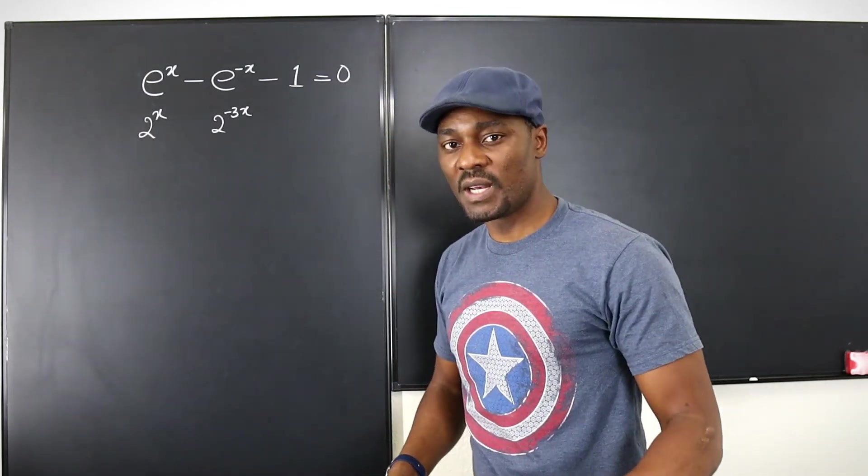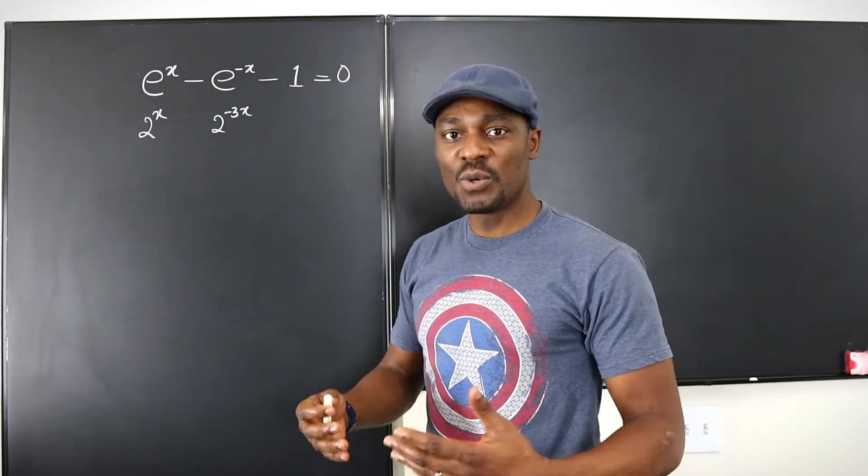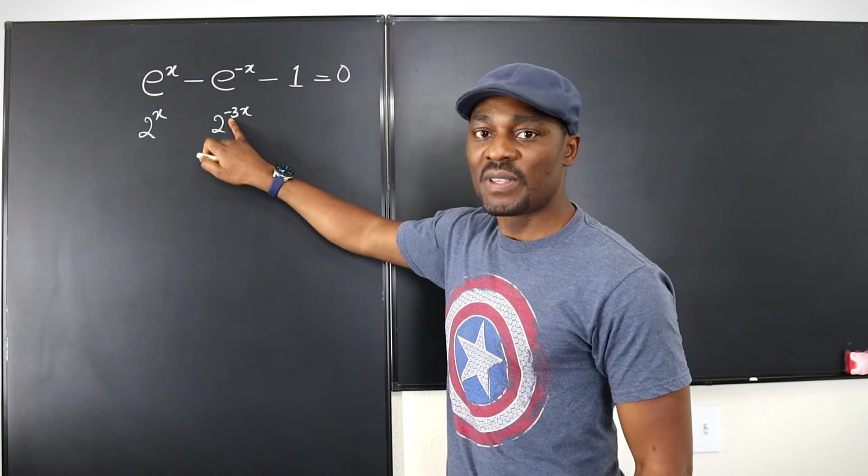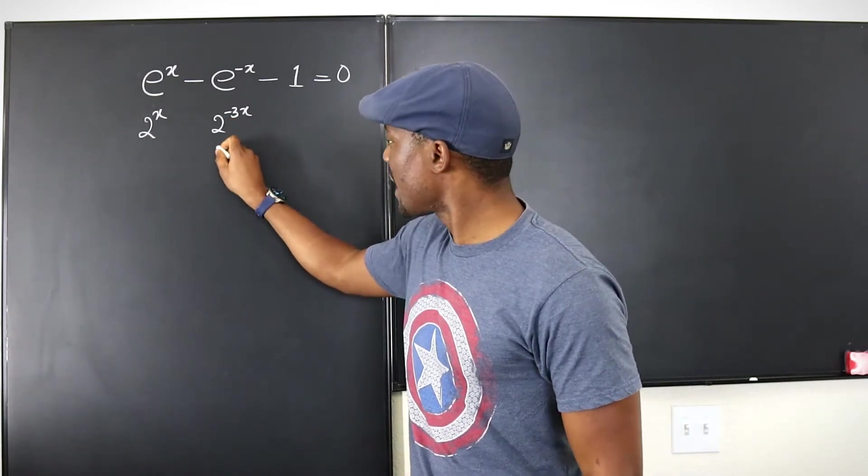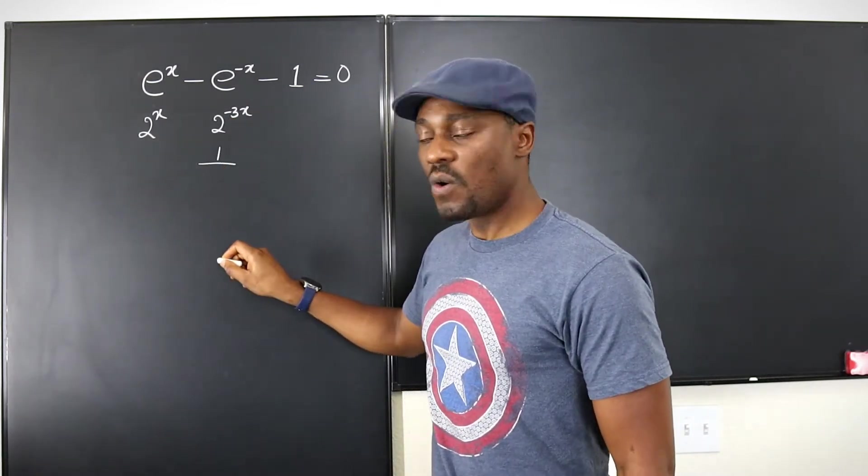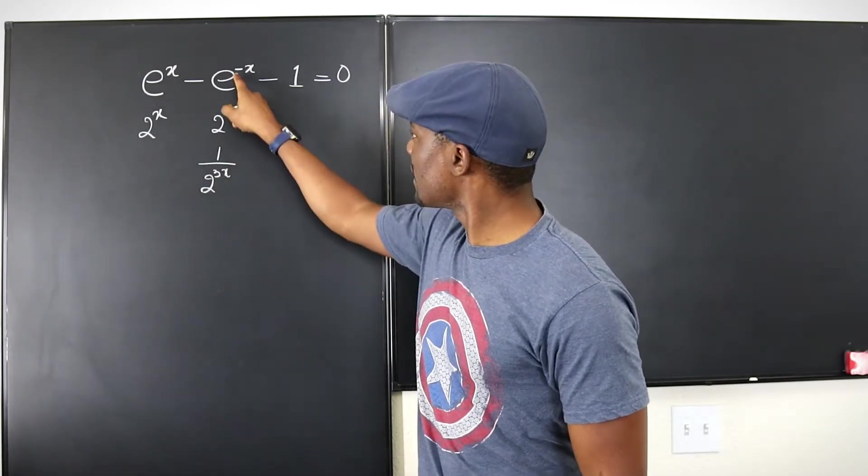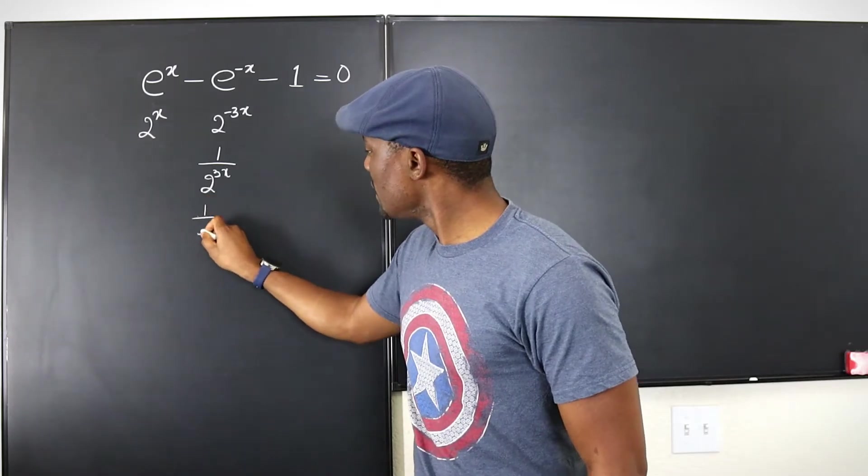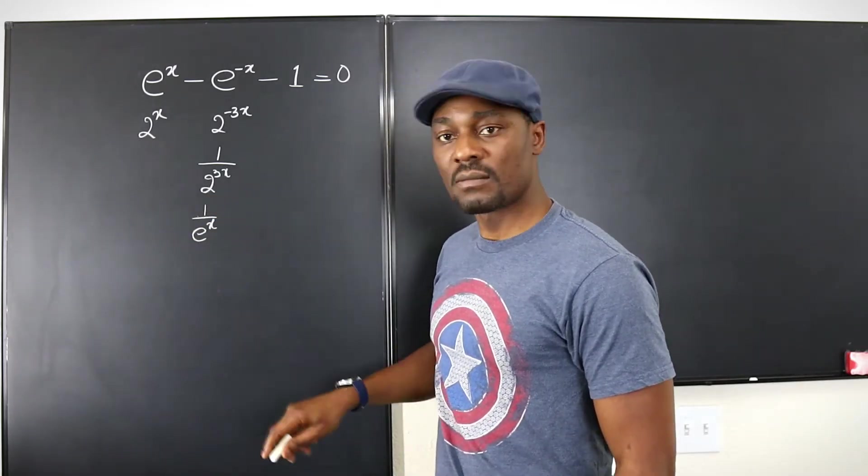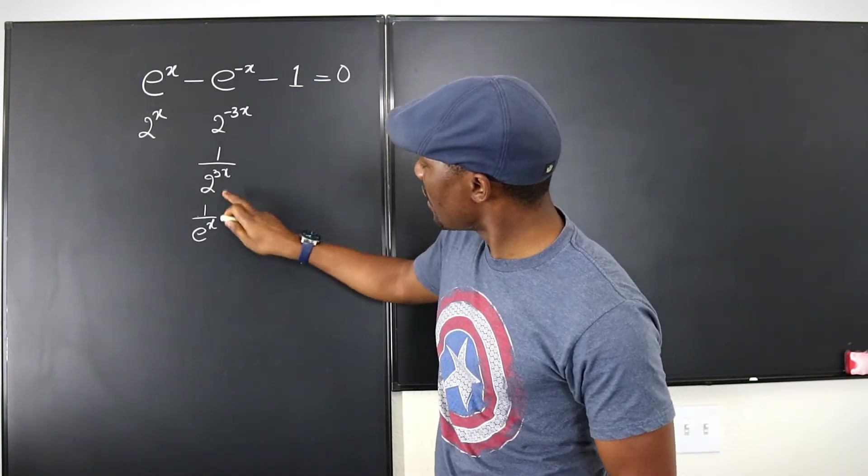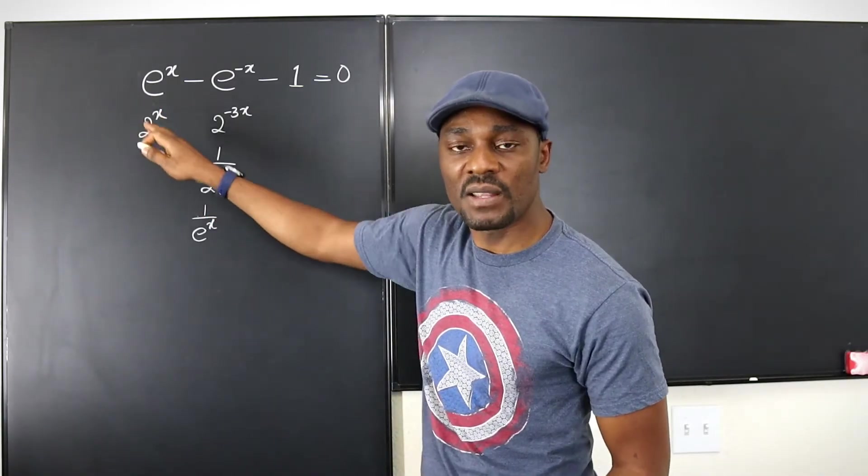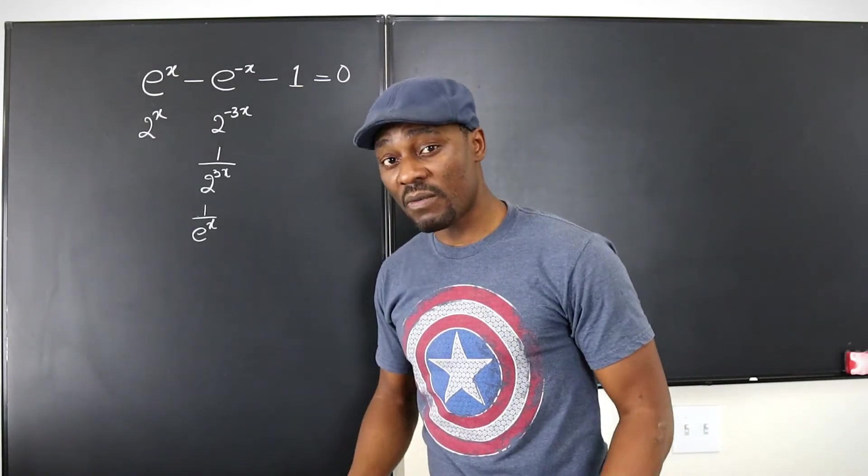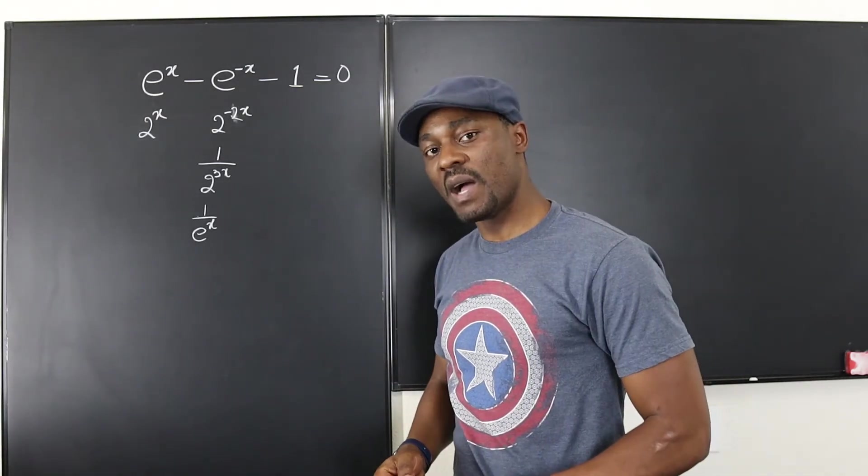But one thing you should realize is that whatever they ask you to do will involve you rewriting this without the negative sign, which means it has to be 1 over 2 to the 3x, just as this one will be 1 over e to the x. And by that you start having to get rid of the fraction by multiplying by the least common multiple. You will end up creating a form of a quadratic equation and that's what this video is about.